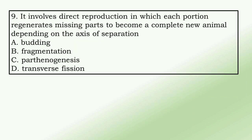9. It involves asexual reproduction in which each portion regenerates missing parts to become a complete new animal, depending on the axis of separation. a. budding, b. fragmentation, c. parthenogenesis, d. transverse fission.